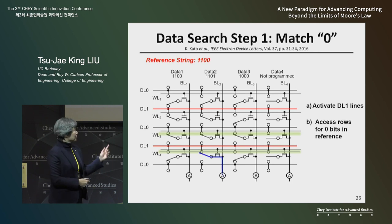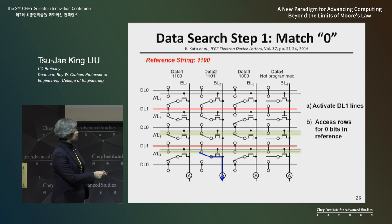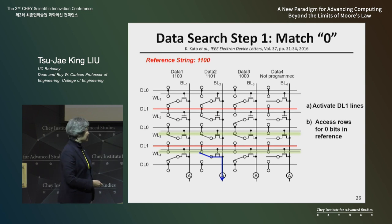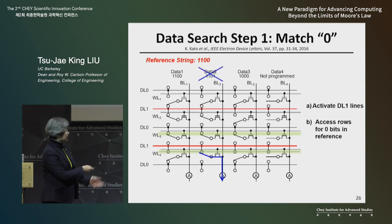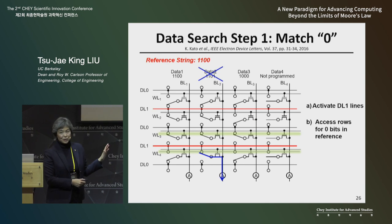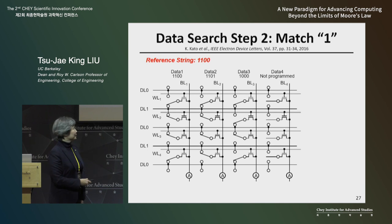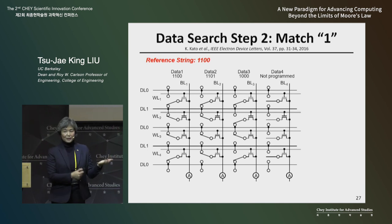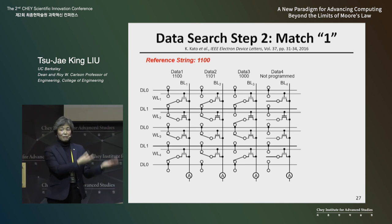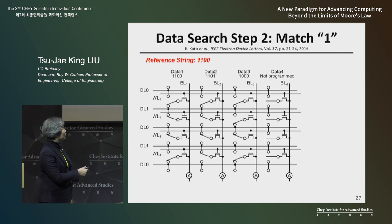Now, if any of those rows is storing a one, the current will flow because the data line ones are charged. Any column that is conducting current does not have matching zeros, so we can eliminate those columns. The next step is the same thing — find which columns have matching ones in the first two rows.